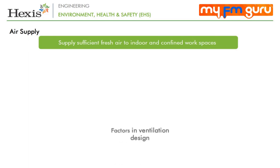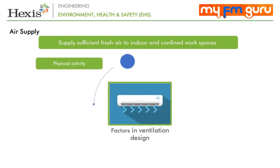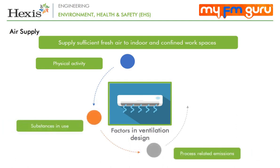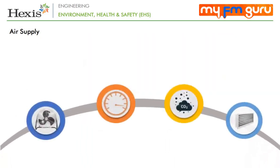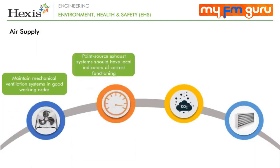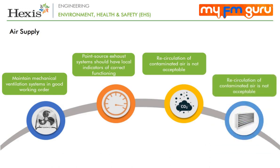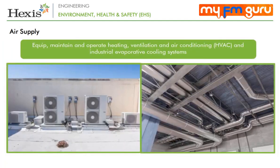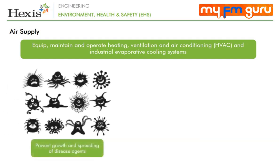Sufficient fresh air should be supplied for indoor and confined work spaces. Factors to consider in ventilation design include physical activity, substances in use and process-related emissions. Air distribution systems should be designed to ensure workers are not exposed to draughts. Mechanical ventilation systems should be maintained in good working order. Recirculation of contaminated air should not be acceptable. Air inlet filters should be kept clean and free of dust and microorganisms. HVAC and industrial evaporative cooling systems should be maintained to prevent growth of disease agents like Legionella pneumophilia or breeding of vectors like mosquitoes and flies.